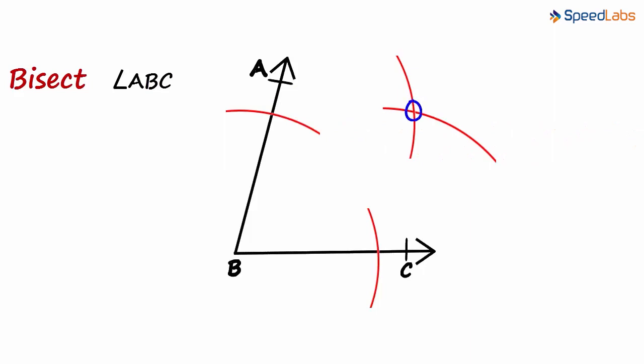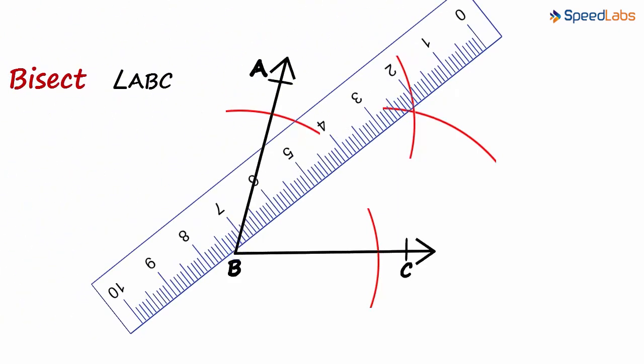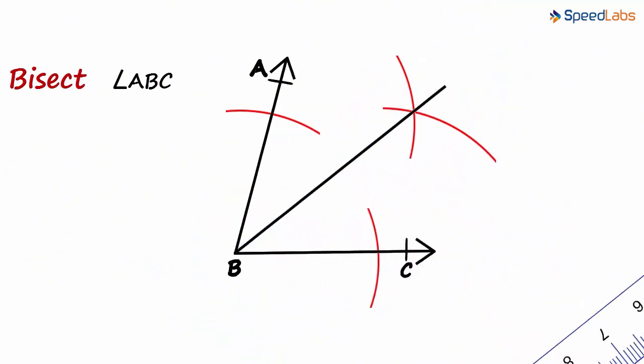So now we get a point where the two arcs intersect. To get the angle bisector, all we need to do is join these two points. So we draw a straight line from point B to the intersection of the arcs.